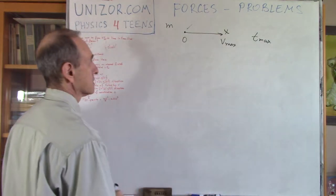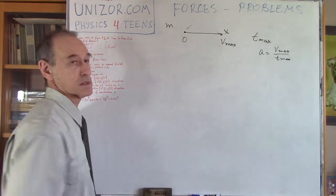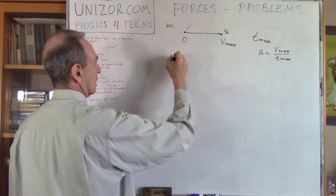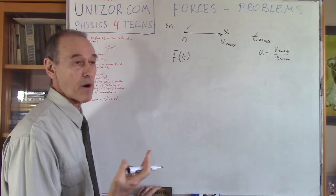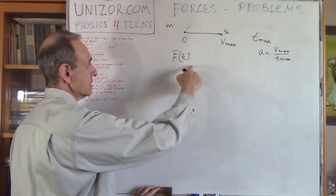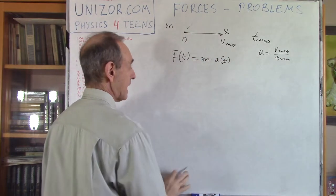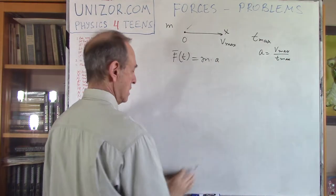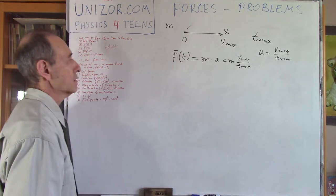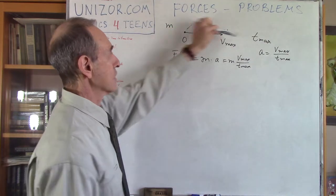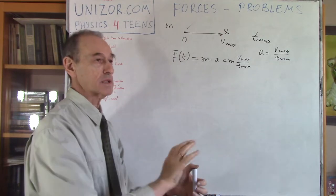Now I know my acceleration and my mass. The next question is: what's the force as a function of time — as a vector? But again this vector will have only an x-coordinate; y and z are always zero. By the second law of Newton, force equals m times a(t). But a(t) is actually constant, so it's just plain a. And I know the value of a, so force equals m·v_max divided by t_max. That's my force. As a vector, this is the magnitude and direction is along x. This is a constant force which accelerates the car with a constant acceleration, and at time t_max it reaches speed v_max.